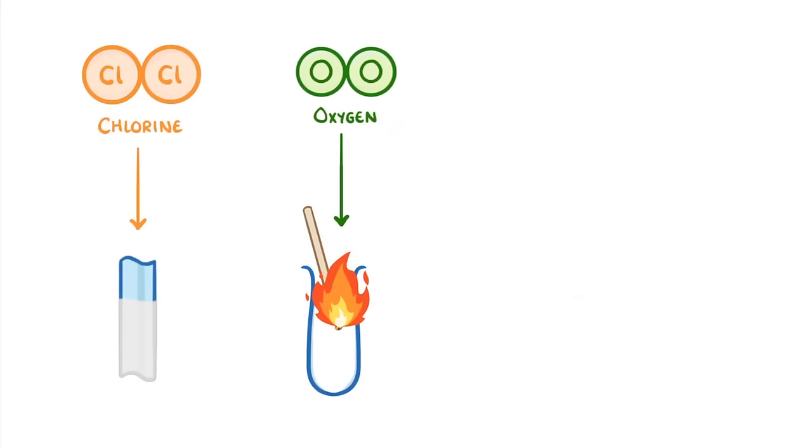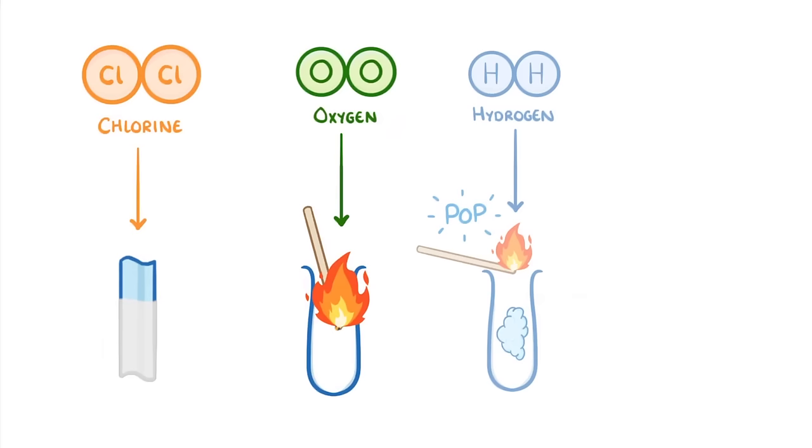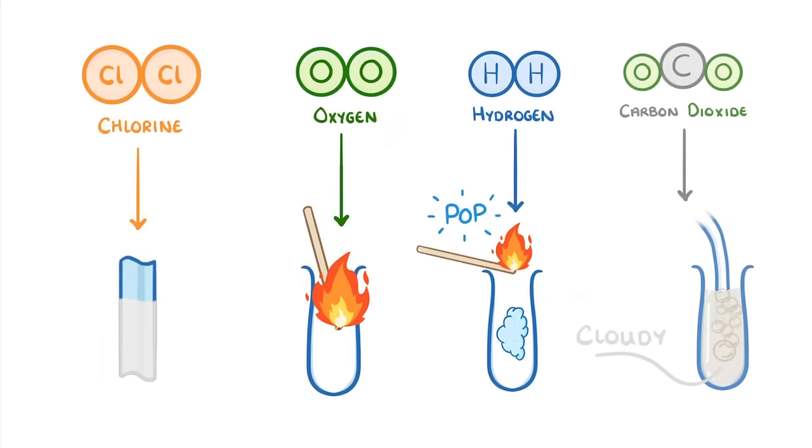So to quickly recap everything: chlorine will turn damp litmus paper white, oxygen will relight a glowing splint, hydrogen will give us a squeaky pop when exposed to a lit splint, and carbon dioxide will cause lime water to go cloudy.